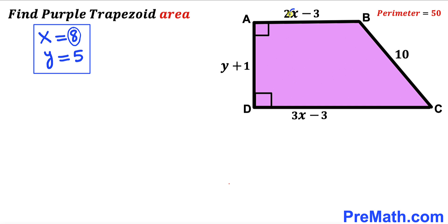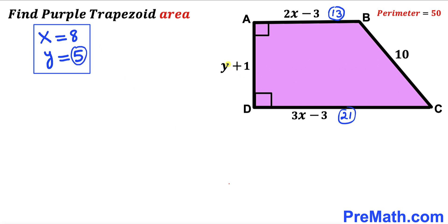Substituting x equals 8 into the side expressions: 2 times 8 minus 3 gives 13 units for side AB; 3 times 8 minus 3 gives 21 units for side CD. Substituting y equals 5: y plus 1 gives 6 units for the height.